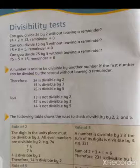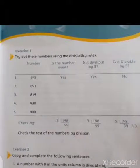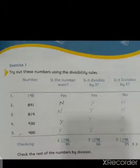So for class, Exercise number 1 and Exercise number 3 are the same. If you understand Exercise number 3, Exercise number 1 will be solved. Now Exercise number 1 is: try out these numbers using the divisibility rules. For class, here we have question number 2, which is 891. Come to the first column, which is: Is the number even?